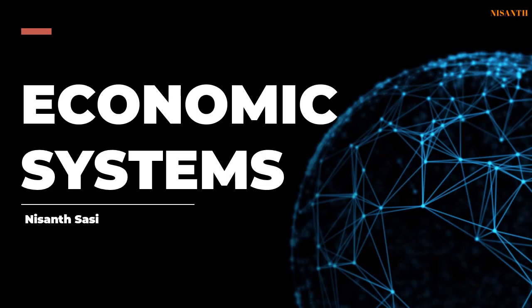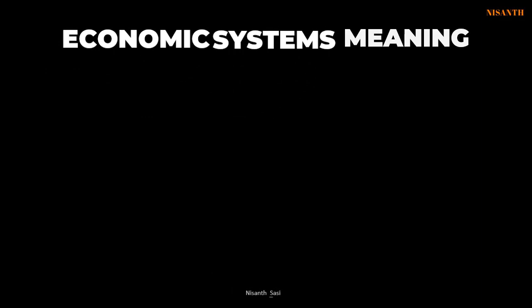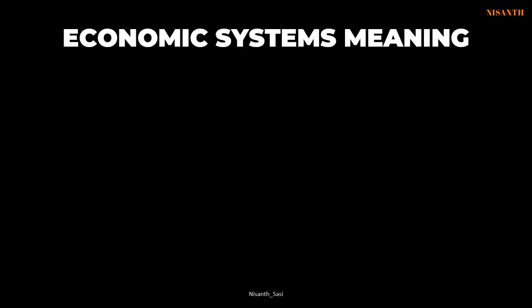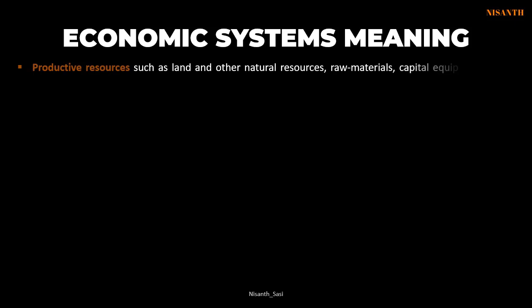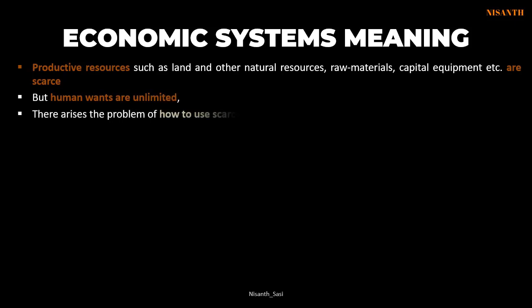Hello, welcome back to the world of business economics. Today I'm going to discuss a topic on economic systems. Economic systems deal with how productive resources such as land, other natural resources, raw materials, and capital equipment are used, because human wants are unlimited. Therefore, there arises the problem of how to use scarce resources to attain maximum satisfaction.